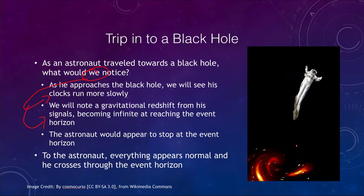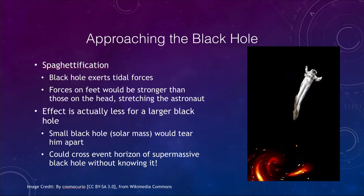The astronaut would notice no difference. We would notice a gravitational redshift from his signals — as he sends out signals, they would get shifted to longer and longer wavelengths, eventually getting shifted infinitely as he reaches the event horizon. From our point of view, the astronaut would appear to stop at the event horizon — time would essentially stop from our perspective watching him. However, the astronaut would see our clocks running really fast, and he would just continue down towards and eventually cross the event horizon.